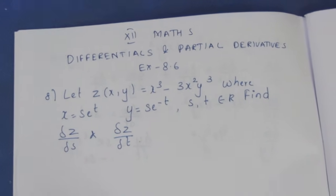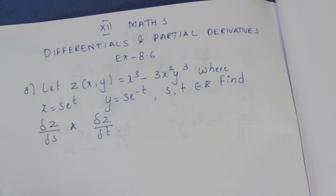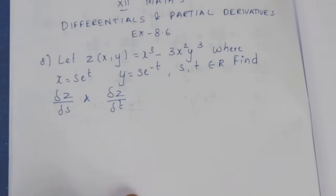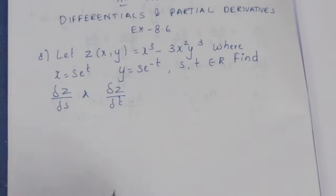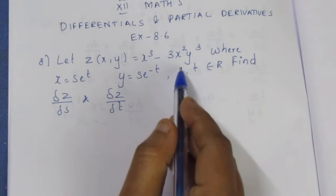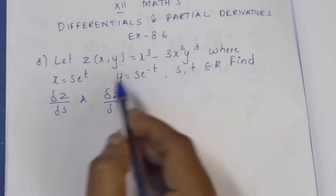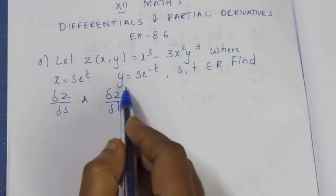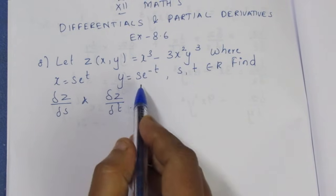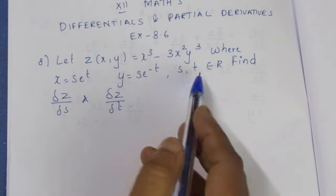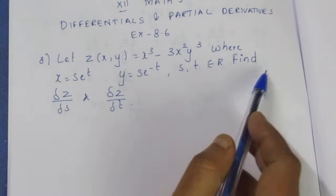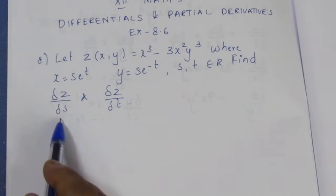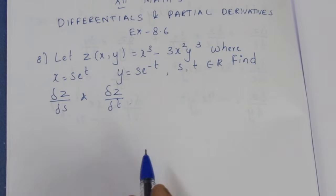The question is the 8th sum. Let z(x, y) = x³ - 3x²y³, where x = se^t and y = se^(-t), with s and t belonging to ℝ. Find ∂z/∂s and ∂z/∂t.